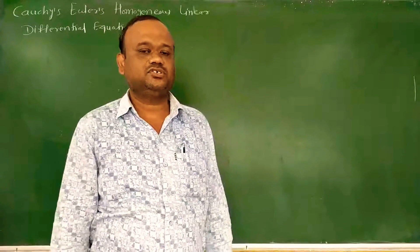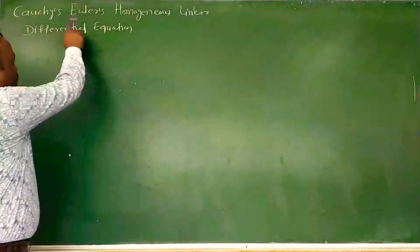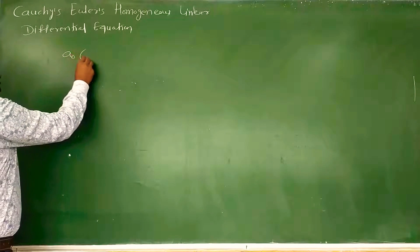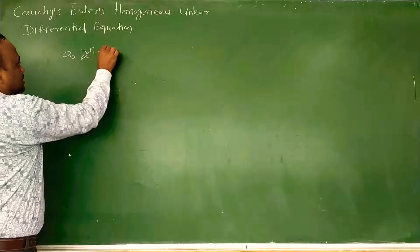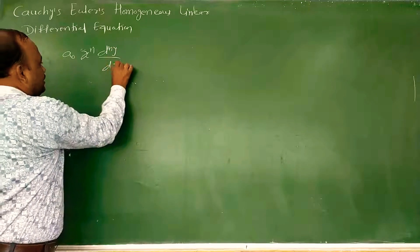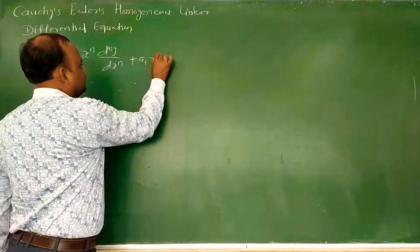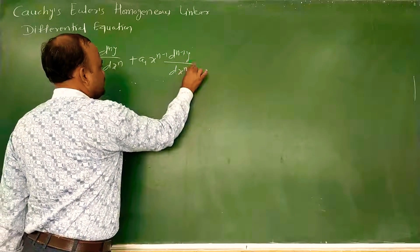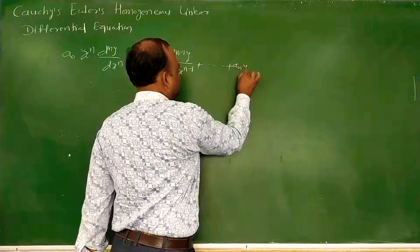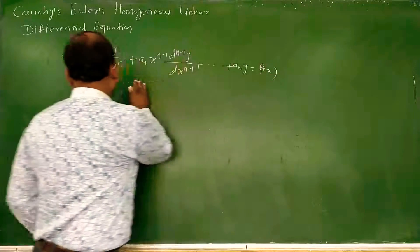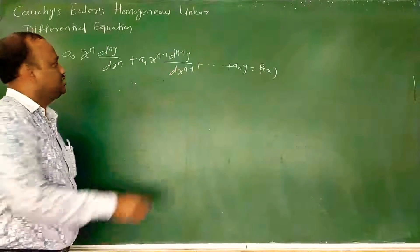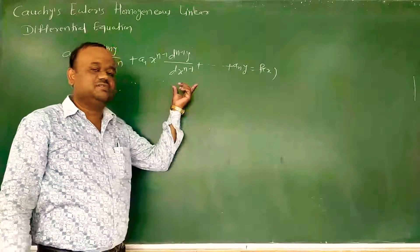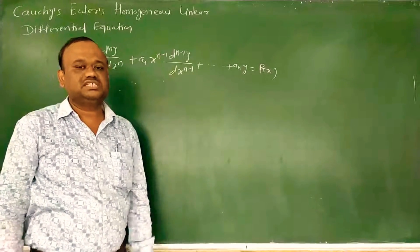These are not linear differential equations with constant coefficients. First we will see Cauchy's Homogeneous Linear Differential Equation. An equation of the type a0 x^n (d^n y/dx^n) + a1 x^(n-1) (d^(n-1)y/dx^(n-1)) + ... + a_n y = f(x). Here a0, a1, ... are constants, but x is not constant — x is the independent variable. Such type of differential equations are called Cauchy's Homogeneous Linear Differential Equation.